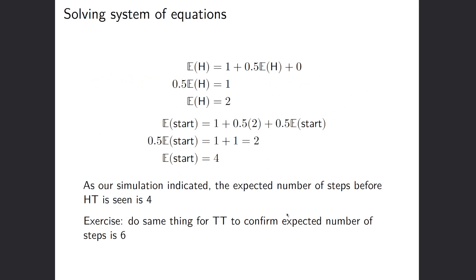So now we'd want to solve this series of equations to get the result. And here we just start out by, we have expected value of heads while we plug our zero in here for HT. And then this is pretty easily solvable and you can kind of just look through this if you want. So as our simulation indicated, the expected number of steps before heads tails is seen is four. So this is what we expected. It was 3.99 in our simulation, but basically four, and here we've proven that that is correct.